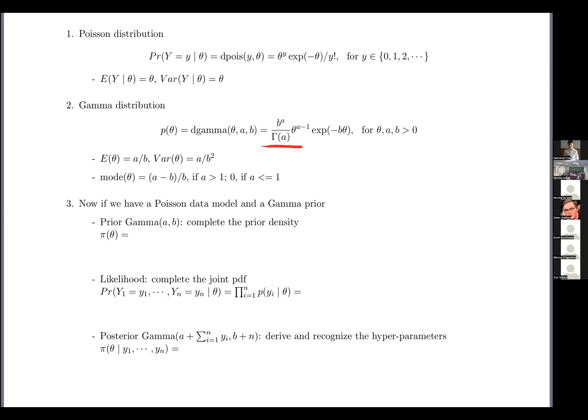The prior theta follows the gamma(a,b), so according to the density, I know my π(θ) should be b^a / Γ(a), and then θ^(a-1), and then in the exponent, -b times θ. So that should be straightforward.